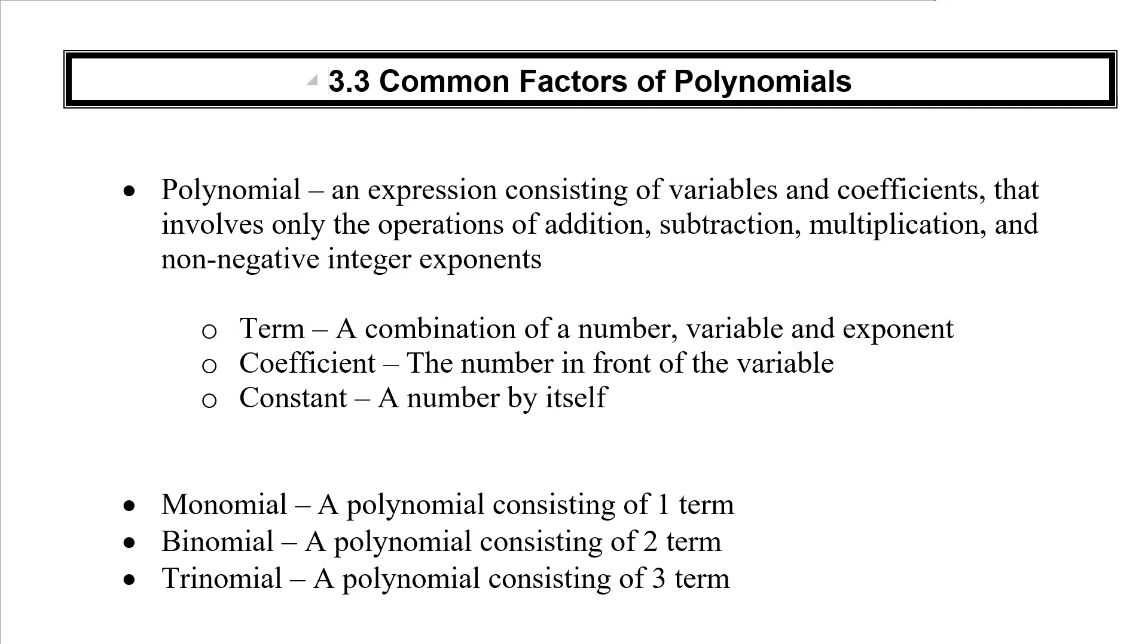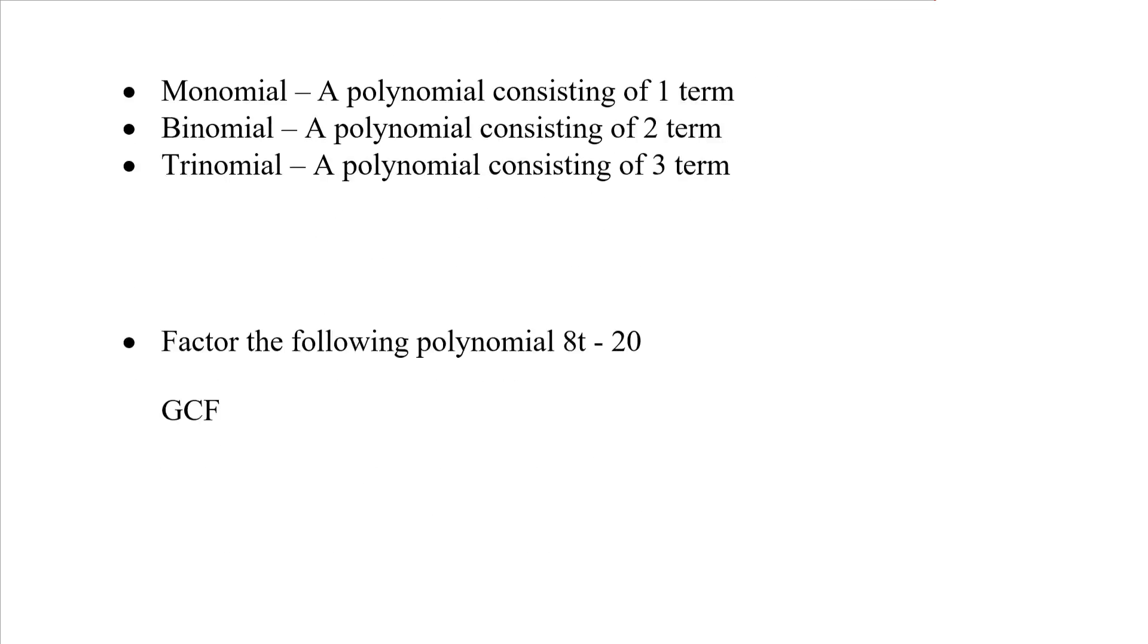Now let's look at how we factor these polynomials. We'll look at our first example. To factor this polynomial, we're going to use the greatest common factor method, GCF. We want to factor the polynomial 8t minus 20. Before I even start factoring, I like to remind myself - what are the terms here? The terms are 8t and minus 20. Now there are two of them, which makes this a binomial.